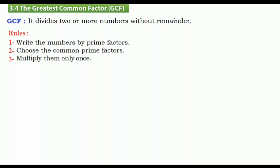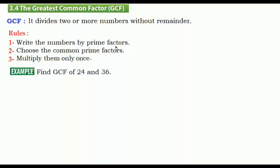We have three rules that are important. First, we are going to write the numbers by prime factors — you know this from the previous lesson. After that, we are going to choose the common prime factors, then we are going to multiply them only once. Let's see an example: find the GCF of 24 and 36.